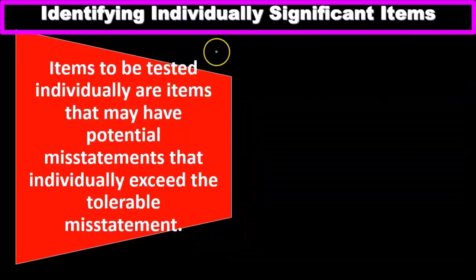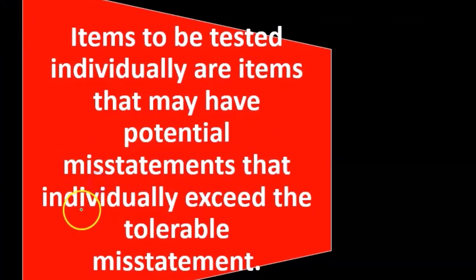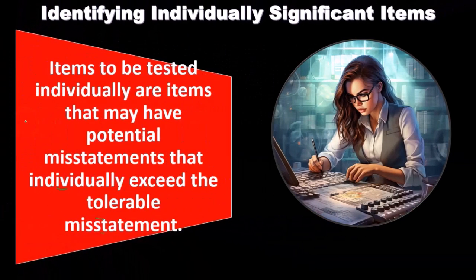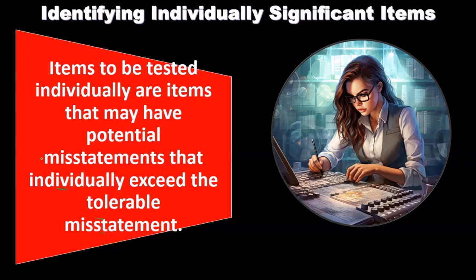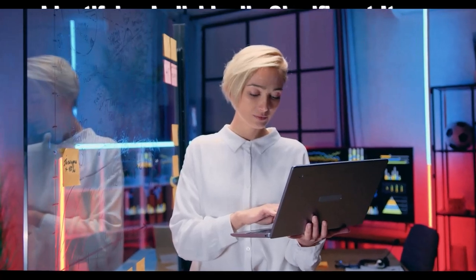Starting with identifying individually significant items. Items to be tested individually are items that may have a potential misstatement that individually exceeds the tolerable misstatement. So if we look through the data and we have areas where the misstatement for that individual item could exceed the tolerable misstatement, we want to pick those items out.